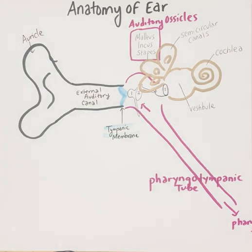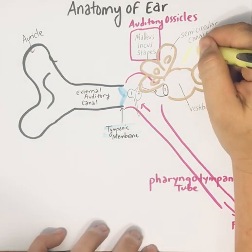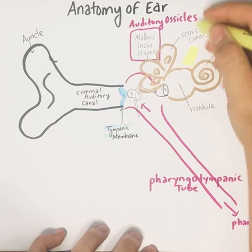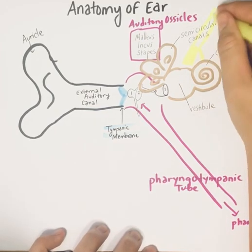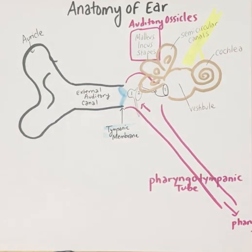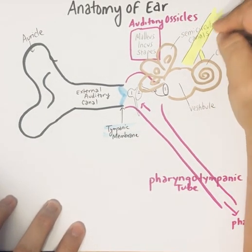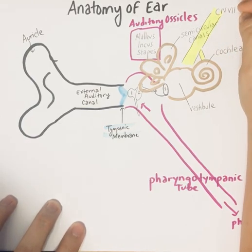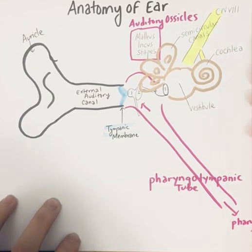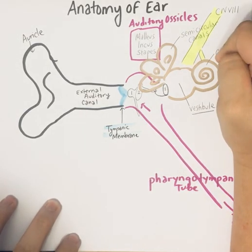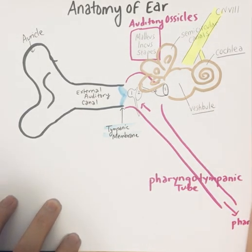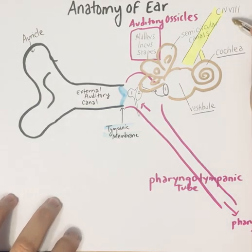Right next to your inner ear is cranial nerve eight, which branches into two branches: a large branch that goes to the vestibule and a branch that goes to the cochlea. Cranial nerve eight is known as the vestibulocochlear nerve — named because the middle portion of the inner ear is the vestibule and the snail-shaped part is the cochlea.